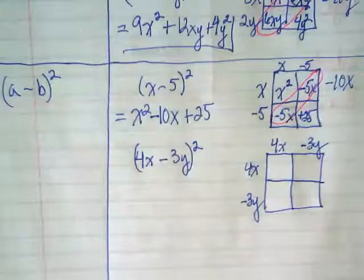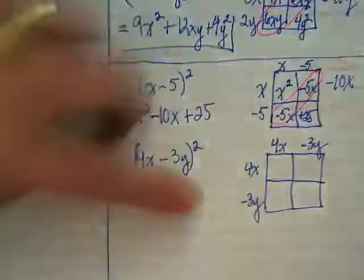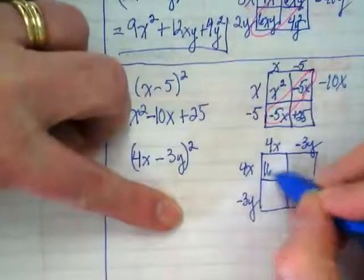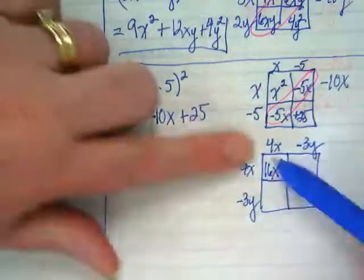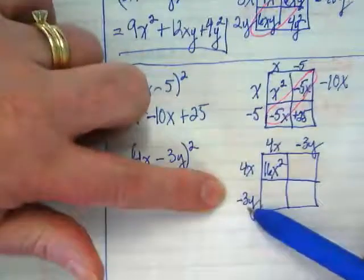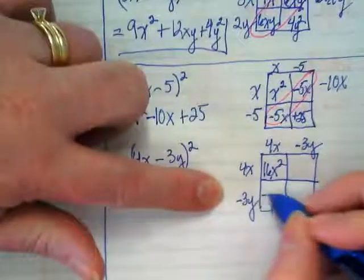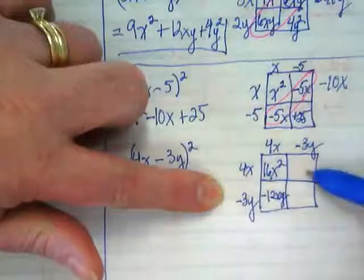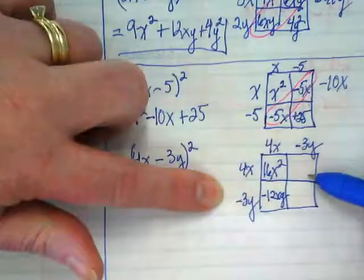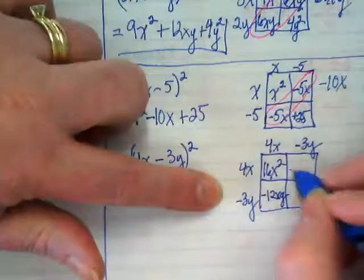What's the 4 by 4 times 4 going to give us? 16x². We're going to multiply the 4 times the -3, getting us? -12xy. -12xy. And what do you think is going to be in this one? Same thing. -12xy.